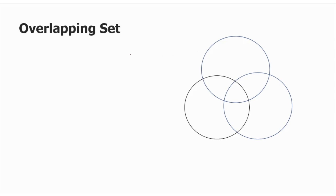It's overlapping sets — think of it like a circle. So A union B, A union intersection — we can take a difficult to easy course. Overlapping sets are three concepts.